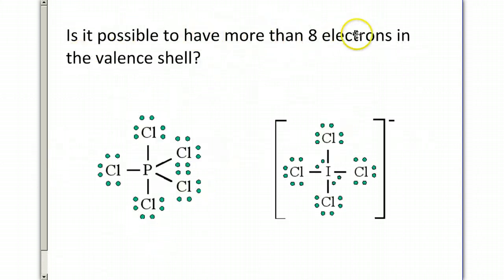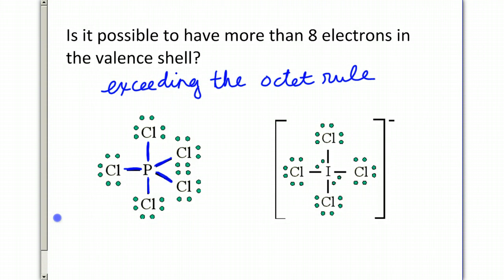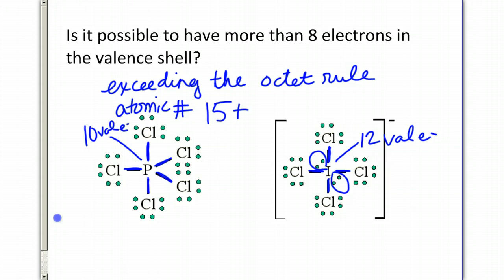So is it possible to have more than eight electrons in the valence shell? It is. It's known as exceeding the octet rule. For example, phosphorus has 2, 4, 6, 8, 10 electrons around it. And so that's obviously more than an octet. However, it's capable of doing that. Elements with an atomic number of 15 or more, so atomic number 15 or higher, are capable of exceeding the octet rule. And then on your right, you'll see the iodine has 2, 4, 6, 8, and then it has this pair here, 10, and another pair here making 12. So this iodine has 12 valence electrons, where this phosphorus has 10 valence electrons, because they can exceed the octet rule.